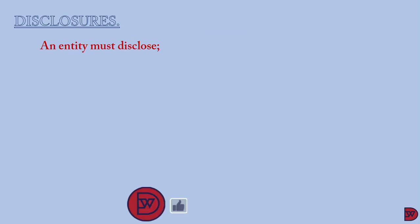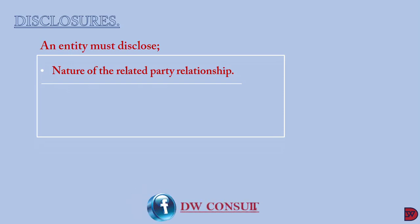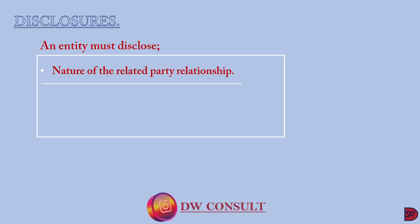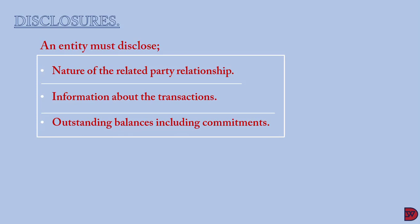Whenever a related party transaction occurs within a financial year, an entity under IAS 24 is obliged to disclose: first, the nature of the related party relationship — whether it is a subsidiary, associate, parent, or key management personnel that the transaction was conducted with; second, information about the transaction — whether it was a sale, a purchase, or a transfer of assets; and if payment was not made in full, the amount outstanding, what commitments have been given, whether a collateral has been left, and what efforts are in place for the debt to be cleared.